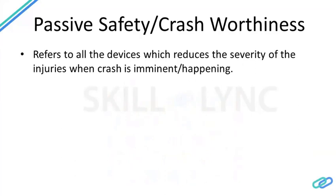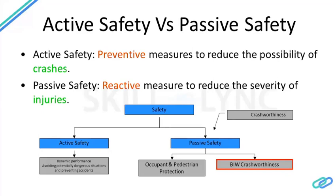Passive safety means designing a car to reduce the injury level or severity of a crash in the event of an imminent or unavoidable crash. Active safety refers to preventive measures to reduce the possibility of crashes, whereas passive safety is a reactive measure — the crash has already happened and you're trying to reduce the severity of injuries. From the flowchart, safety is divided into active and passive safety.